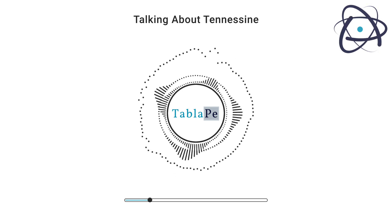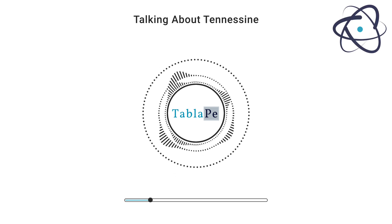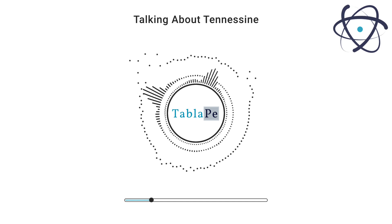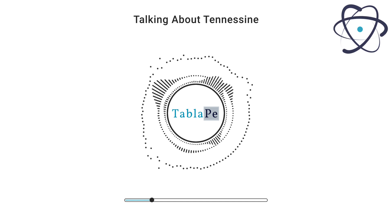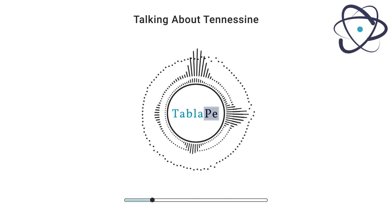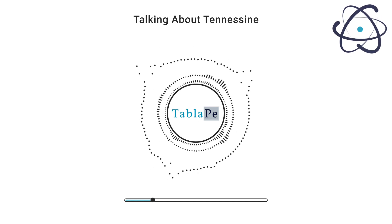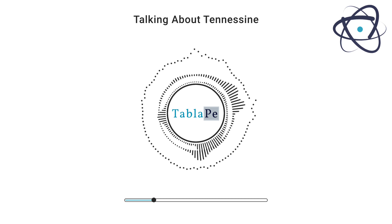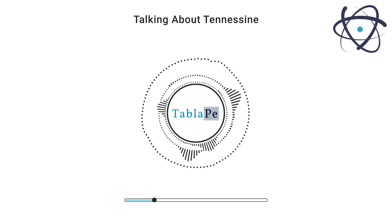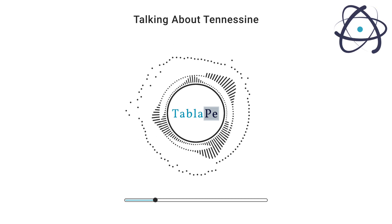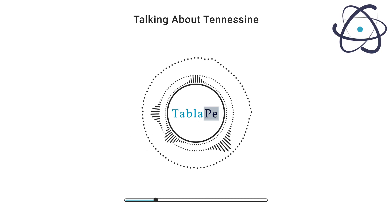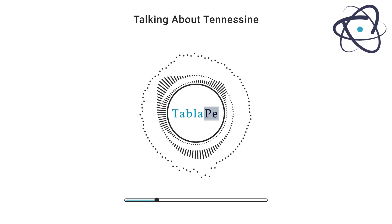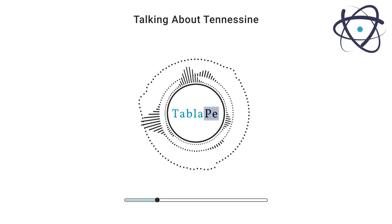Tennessine is situated in the halogen group of the periodic table, sharing a group with elements like fluorine and iodine. However, unlike its stable halogen counterparts, Tennessine is highly unstable.